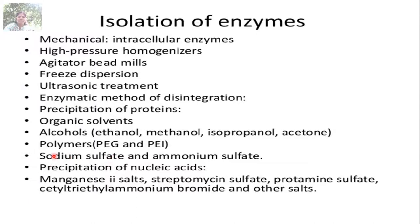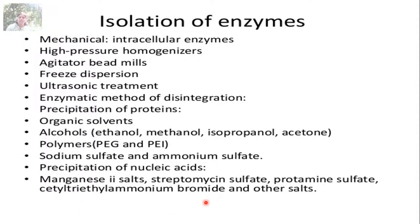Enzymatic methods of disintegration can also be used. For precipitation of proteins, organic solvents such as ethanol, methanol, isopropanol, and acetone can be used. Sodium sulfate and ammonium sulfate are used as salts to precipitate proteins by the salting-out method. Precipitation of nucleic acids — contaminants in protein isolation — is done using alcohol, and manganese salts, streptomycin sulfate, protamine sulfate, and CTAB (cetyltrimethylammonium bromide) are also used.